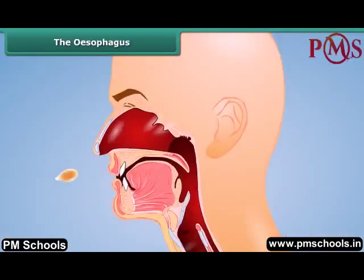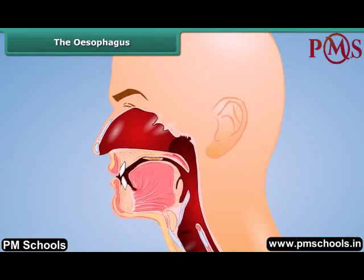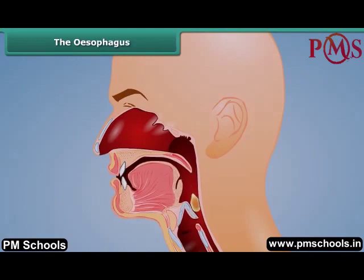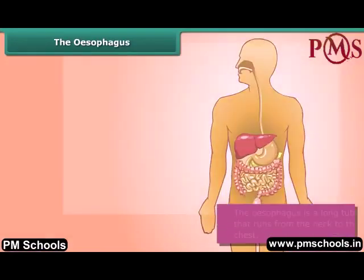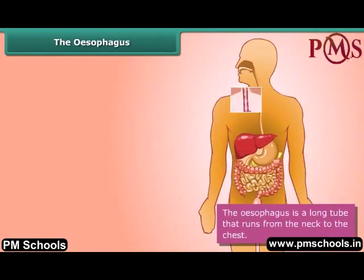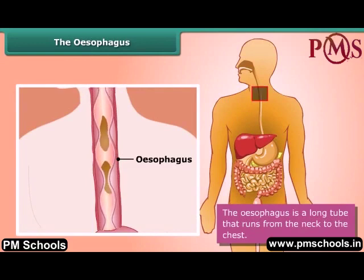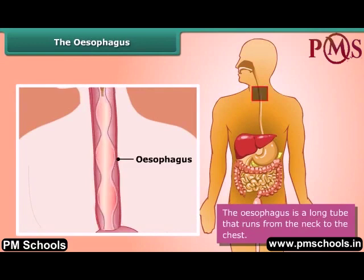When the food we eat becomes a soft mass, our tongue pushes it to the food pipe or esophagus. The esophagus is a long tube that runs from the neck to the chest. The movements of its walls force the food to the stomach.